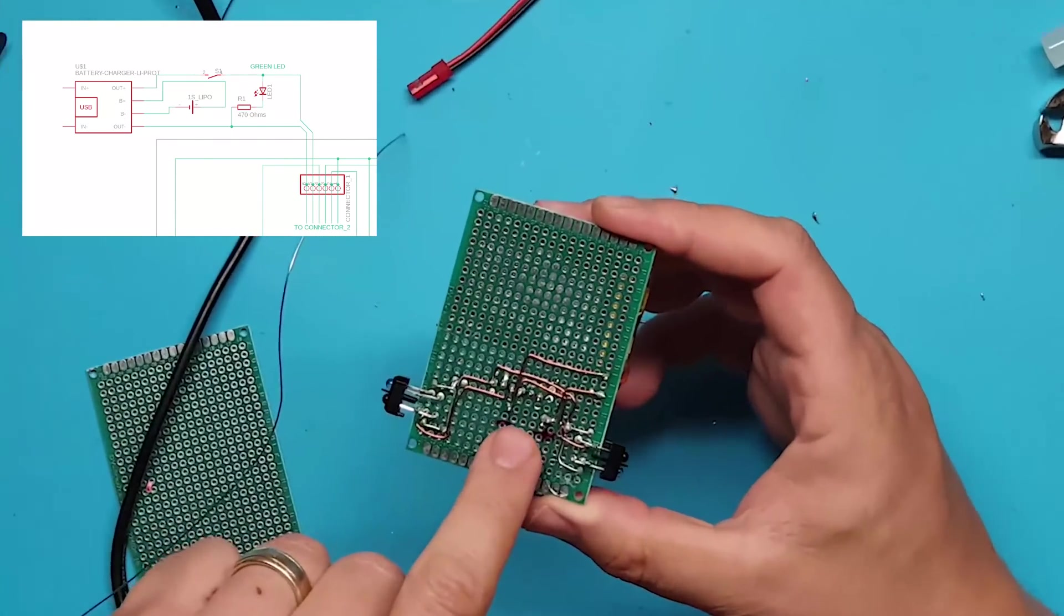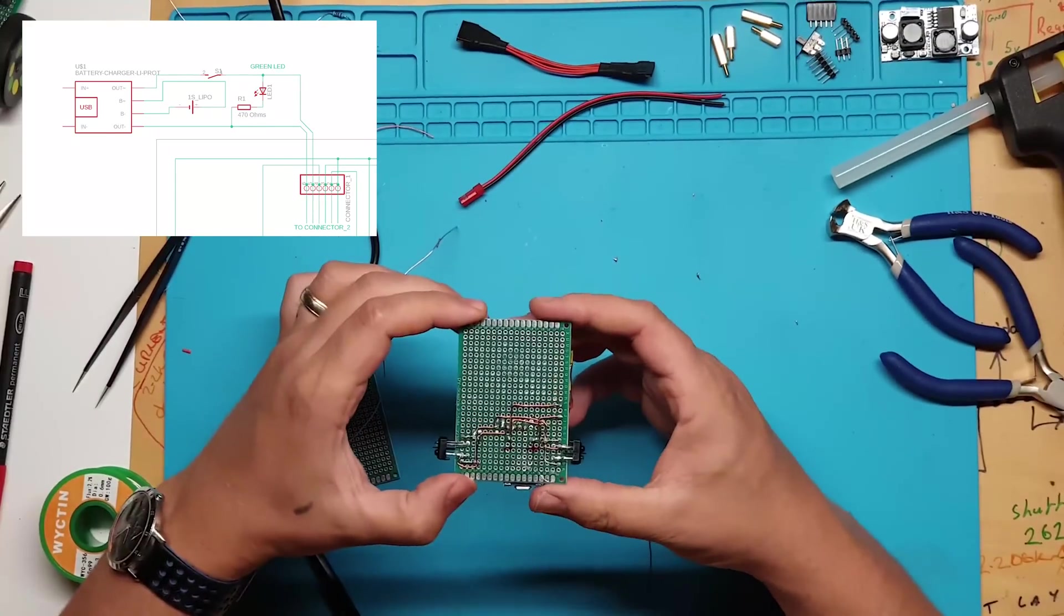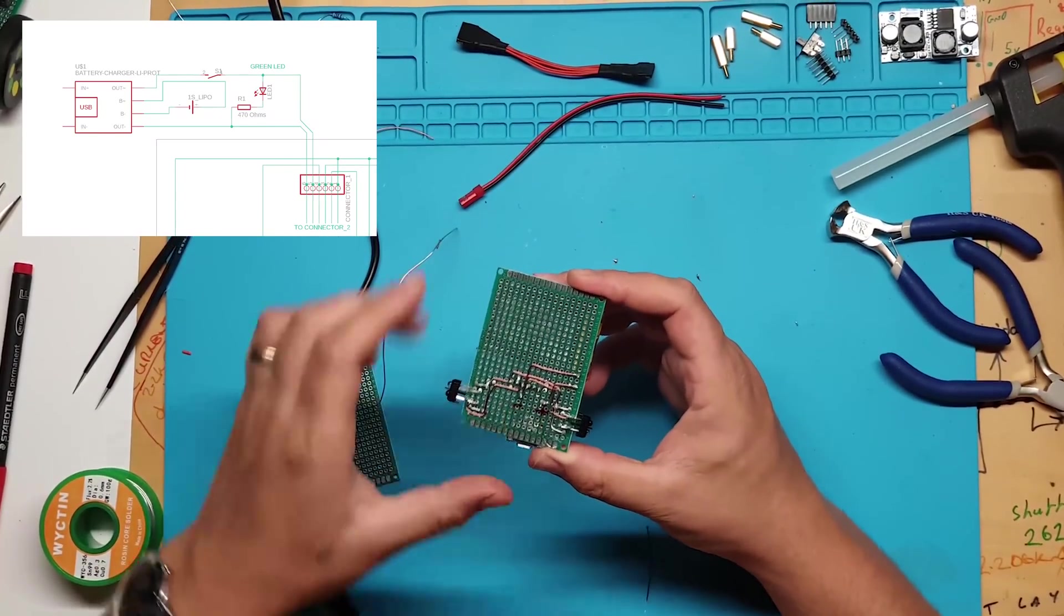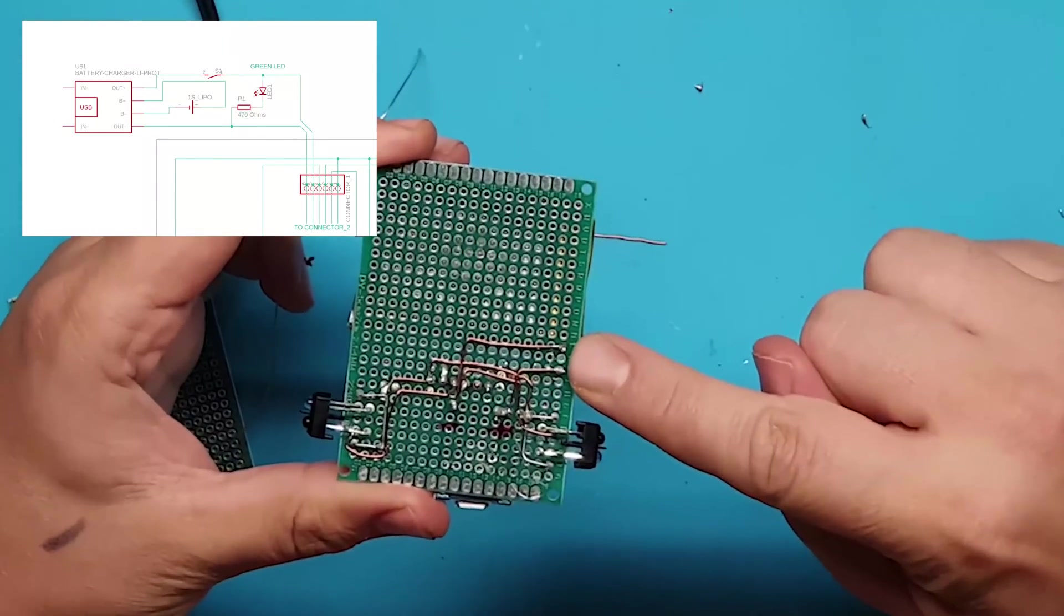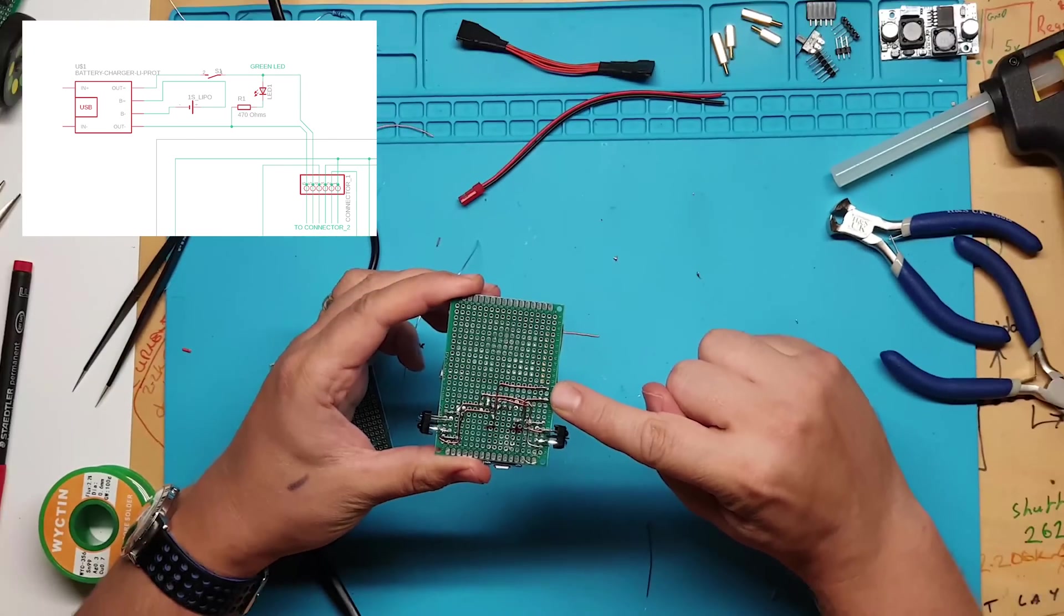This is where the battery connects to the charging module. This is the output of the module. Remember if you have the other type then yours will be connected differently. This is where the battery is soldered to the perf board. The observant of you would have noticed that I have connected the battery's terminals incorrectly. Don't worry, I will fix this later.